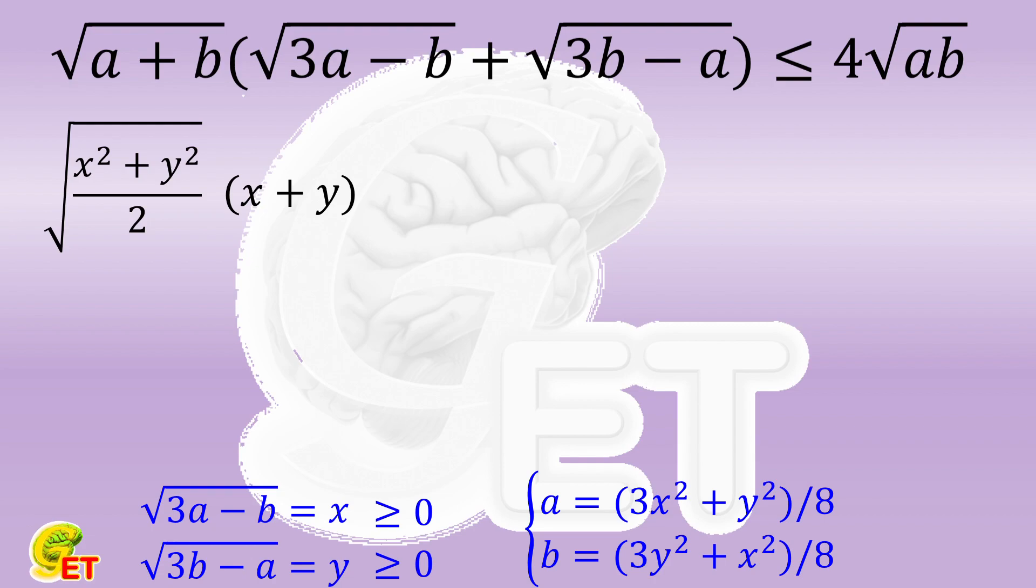Then we bring A and B to the right side of the original inequality. Calculate the numerator. We get 3X to the 4th power, plus 3Y to the 4th power, plus 10 times X squared times Y squared.